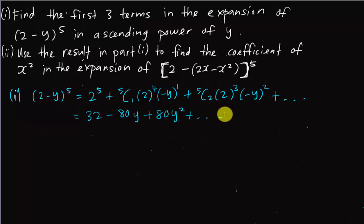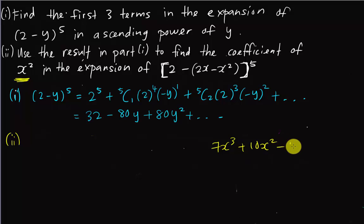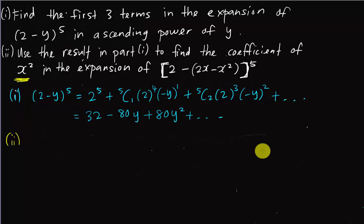Now for part 2: the question says to use the result in part 1 to find the coefficient of x² in the expansion. The coefficient means the number in front of the x² term. For example, in 7x³ + 10x² - 5x, the coefficient of x² is 10, coefficient of x³ is 7, and coefficient of x is -5. When they say 'independent of x', they want the constant term, which is x^0.